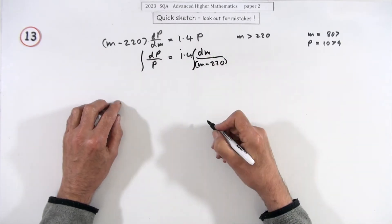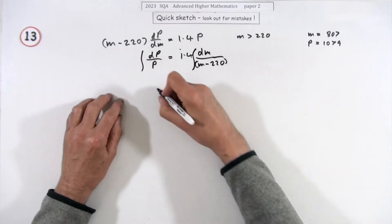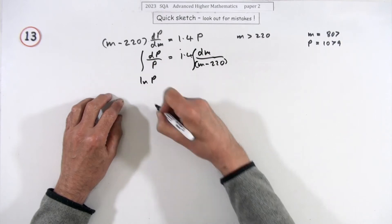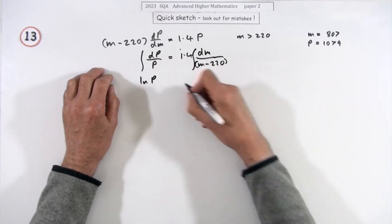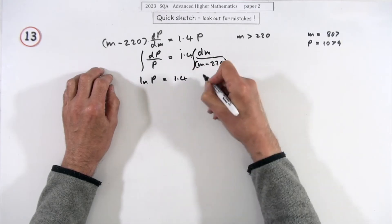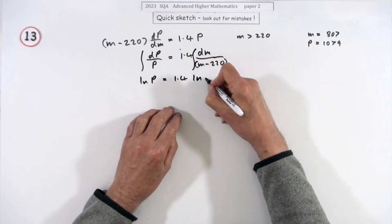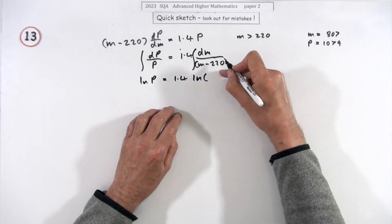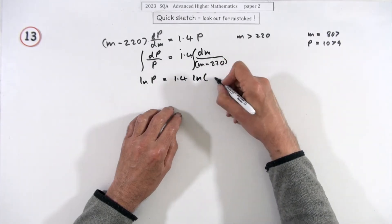Integrating gives ln(p) on the left — p is a positive amount so no absolute value needed. On the right that's 1.4 times ln(m minus 220), which is also safe because it tells you that m is greater than 220, so that will never be zero or negative.